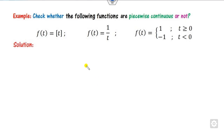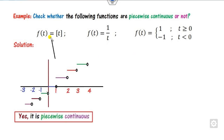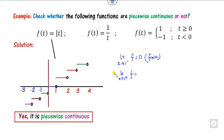Let us look at certain examples. You can do this by two methods: graphically or by using mathematical theory. Looking at this first function graphically, what is the limit of f at 1 from the left? That is 0, which is a finite value. What is the limit as x approaches 1 from the right? Looking graphically, it is 1. Since both are finite, we can say it is piecewise continuous. You can check each breaking point and confirm that at each breaking point the limit is finite, so yes, it is piecewise continuous.